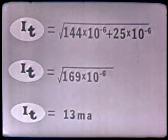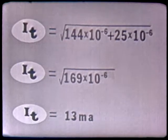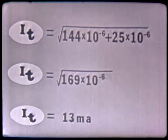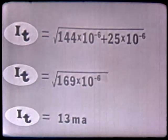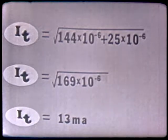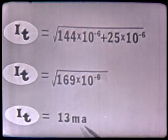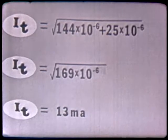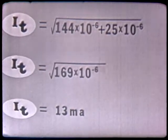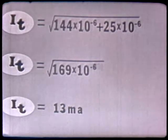Adding: 144 plus 25 equals 169 times 10 to the negative 6. Remember, when adding, the exponents remain the same. Extracting the square root of 169 gives 13, and the square root of 10 to the negative 6 is 10 to the negative 3, which is milli. So our total current, determined by Pythagorean theorem, again comes out to be 13 milliamps.